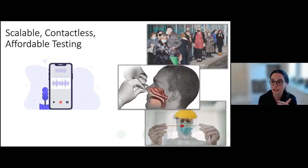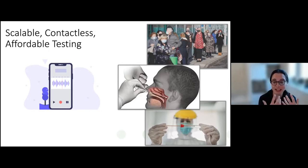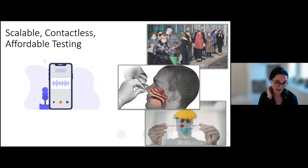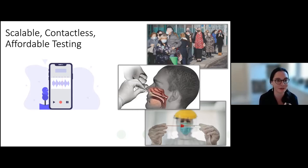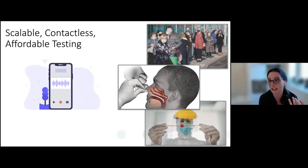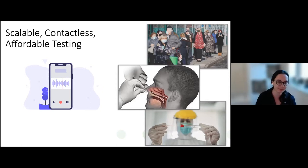Why would we want this data? The idea is to develop models that can automatically understand if someone has COVID or how the COVID is progressing. The advantage of doing it on a phone is scalability — many people have a phone. It's contactless, which for this disease is important. It's obviously affordable and can be repeated many times without implications.